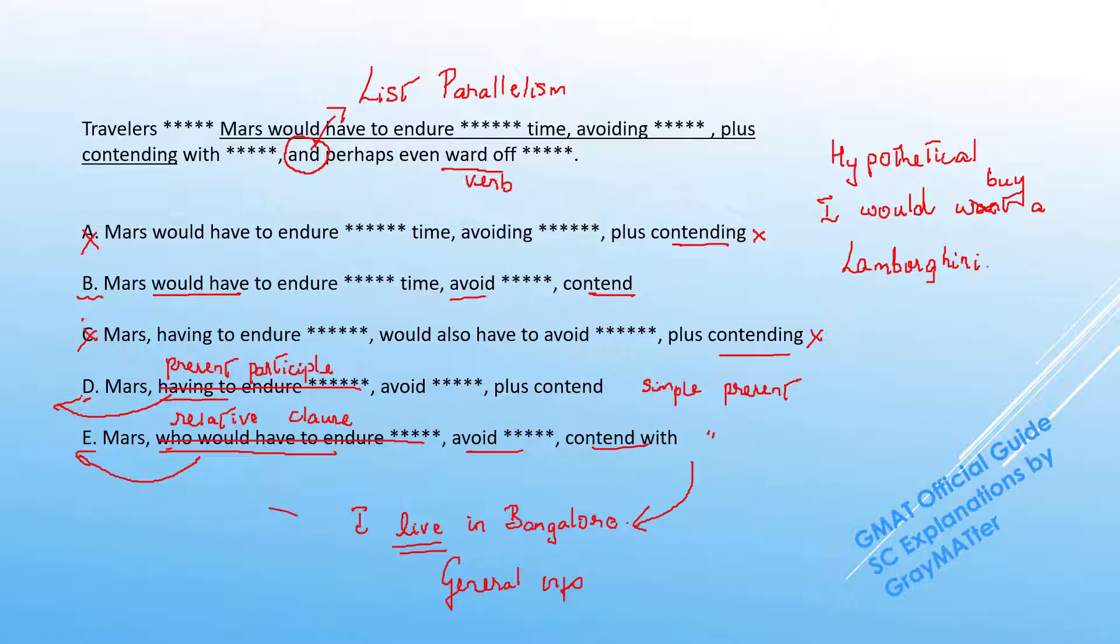So logically D and E, even though they kind of look parallel, they don't make sense. This leaves us with the right answer choice B for Bravo.